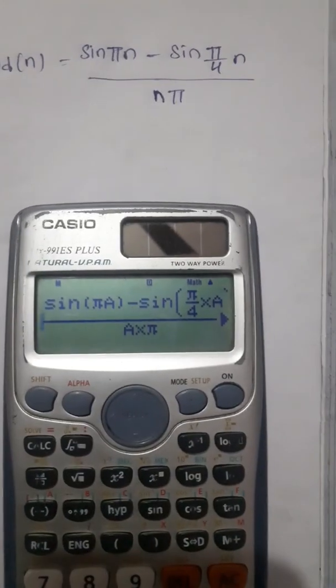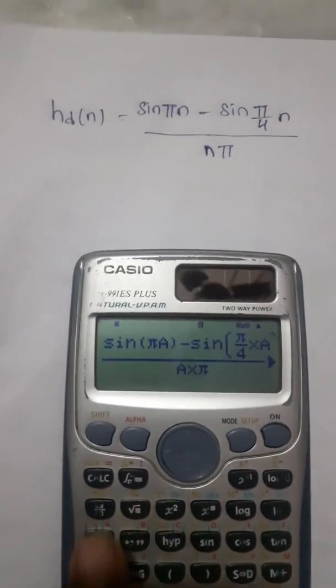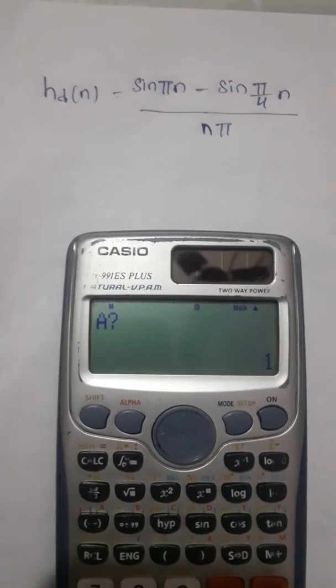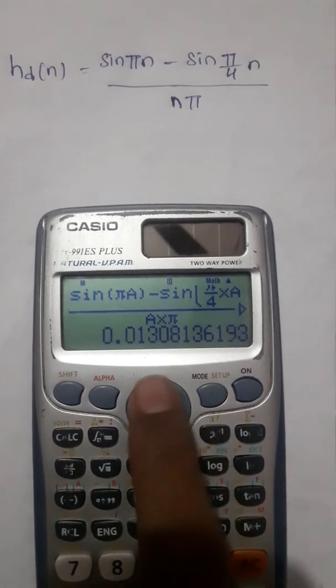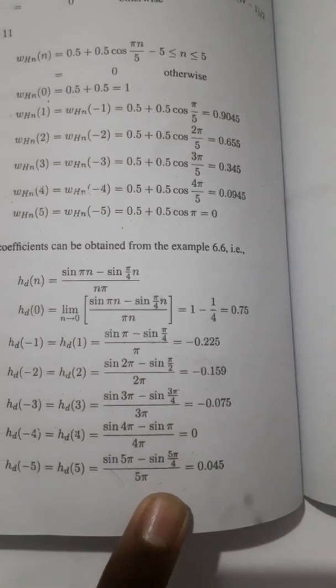When we substitute with 1 using the given values, we get an output which is not equal to the textbook. That is 0.103, which is not equal to -0.225. So we have to use a special technique to get the exact value.